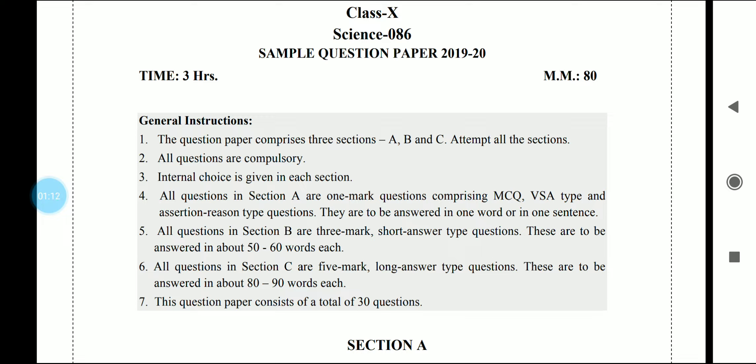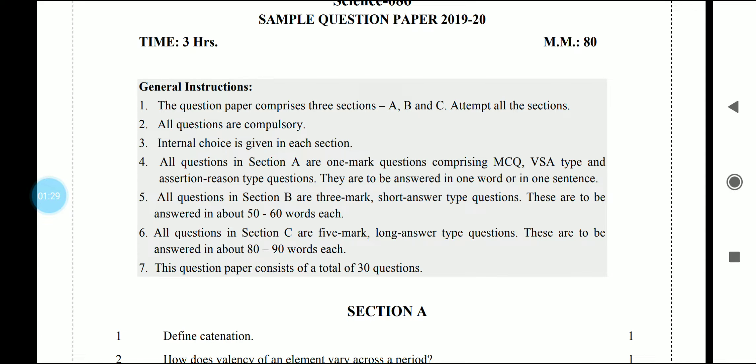In section B, there will be 3 marks questions with short answer type questions in 50-60 words. Section C has 5 markers with long answer type questions and the word limit is 80-90 words. There are 30 questions in all.